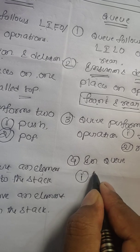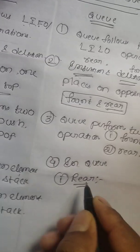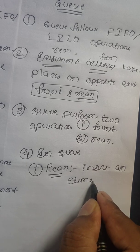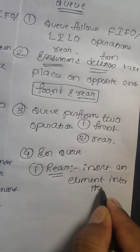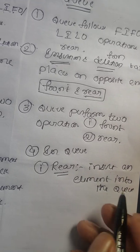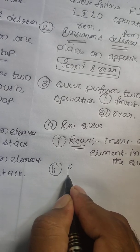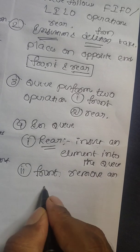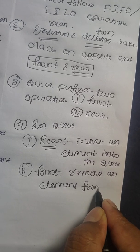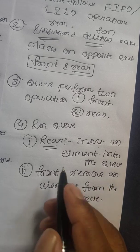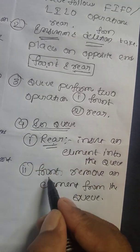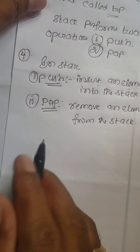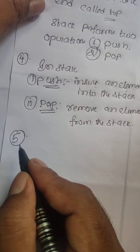In queue, the first operation is rear — it means insert an element into the queue. Whereas the second operation is front — it means remove an element from the queue. So in queue the two operations are rear and front.